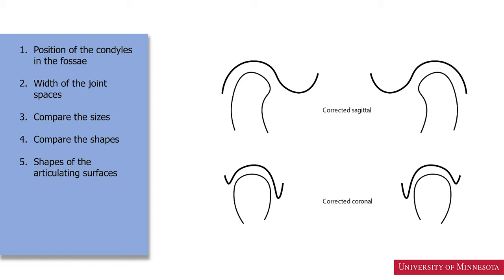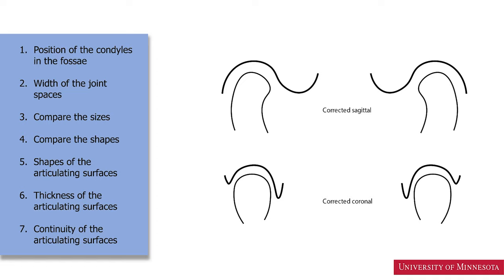We should look at the shapes of the articular surfaces — whether the articulating surface is round or flat. We should look at the thickness of the articulating surfaces, whether these are well corticated or sclerosed. We should also look at the continuity of the articulating surfaces to rule out any erosion or presence of subcortical pseudocyst. Evaluating these seven radiographic features is essential for temporomandibular joint CBCT image interpretation.